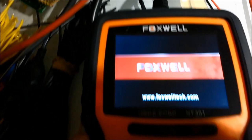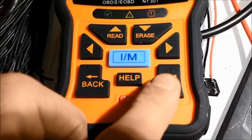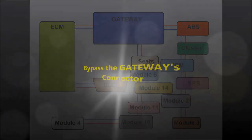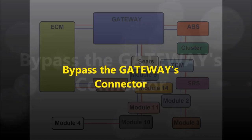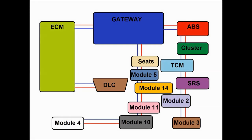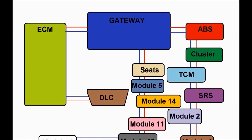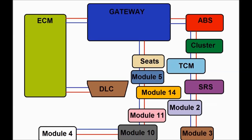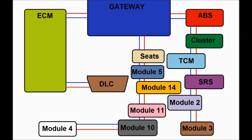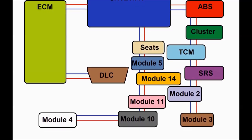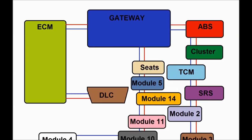Some people think that if the vehicle has a gateway, everything is lost and there's nothing you can do — that's not the case. A gateway is a module that interconnects different modules together with the ECM and the DLC connector. It's basically like a gatekeeper — that's why it's called a gateway. All the modules are connected to the gateway, and the gateway decides who has access. We'll do another video specifically on gateways.